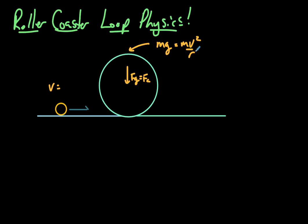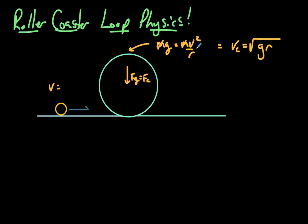If you go any slower than that, gravity is going to be greater than the centripetal force that you need, and your ball is going to follow a tighter arc — it's going to fall off the circle. If you go faster than this minimum velocity, no problem, because gravity will provide some of the centripetal force, and the normal force from the loop itself will provide the rest. Mass doesn't matter, and rearranging we get that the critical velocity is equal to √(gr).